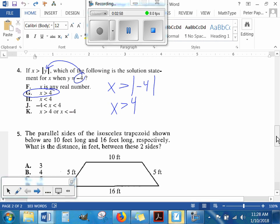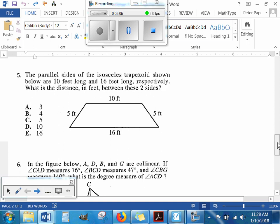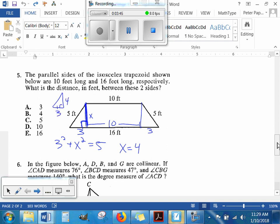Please select your answer for number five. Since this is an isosceles trapezoid, we can take 16 minus 10, which gives us 6, so there's 3 on each side. We know this forms a right triangle, so we can use the Pythagorean theorem. 3 squared plus something squared equals 5 squared, so x is 4. Or you can recognize this as a 3-4-5 triangle, which the ACT uses frequently. The answer is B.